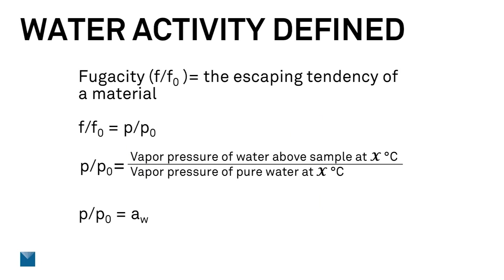So what is fugacity? It is the escaping tendency of a material — what vapor can escape out of the sample. Fugacity can be measured by partial pressures, or the vapor pressure of water above a sample at a specific temperature, divided by the vapor pressure of pure water at the same temperature. And relative vapor pressure — sometimes termed partial vapor pressure — is exactly water activity. If we can determine the partial vapor pressure of a sample, we can calculate the water activity.